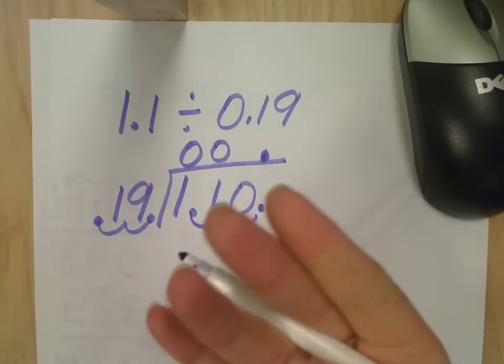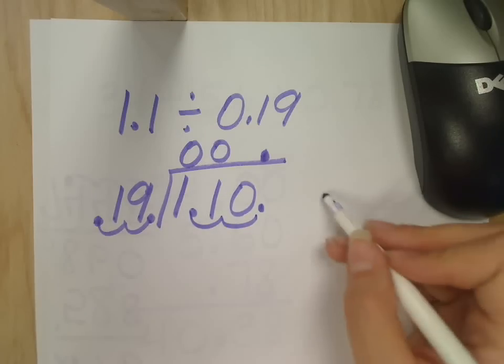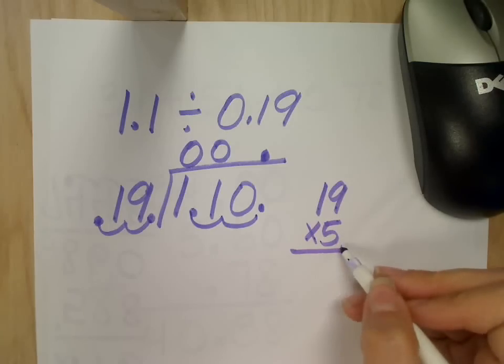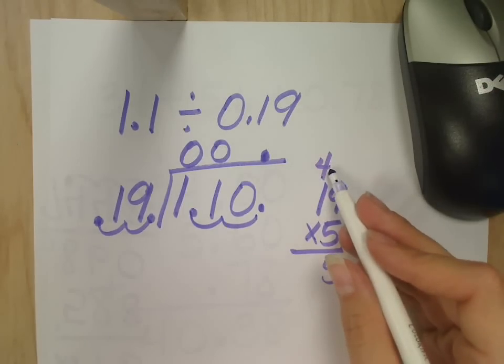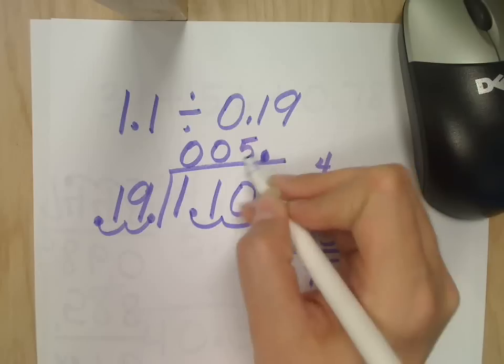So I'm going to pull to the side and work it out. Nineteen times five. Five times nine? Forty-five. Five times what is five plus four? Nine. Ninety-five. I think you're right. Five times.